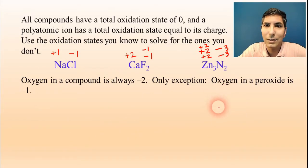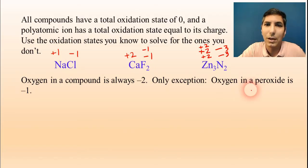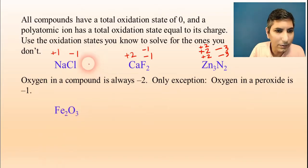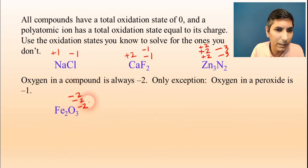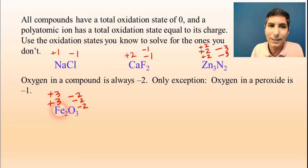In a compound, oxygen is pretty much always going to be negative two. There is an exception: if you see a peroxide, oxygen in a peroxide is negative one. But 90% of the time, oxygen is going to be negative two. In this case, we know the oxygen is negative two, and we have three of those — giving a total of negative six. That means the iron has to account for a positive six between those two atoms. The only way for that to work is to have two ions of plus three apiece, so the oxidation state of iron is plus three.